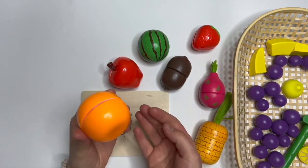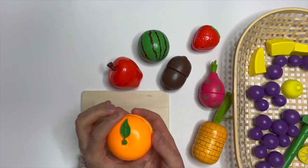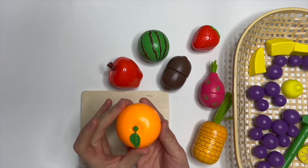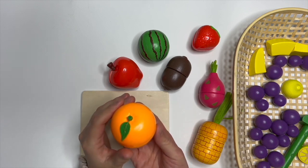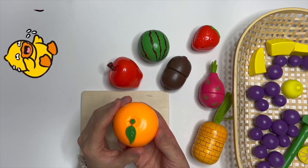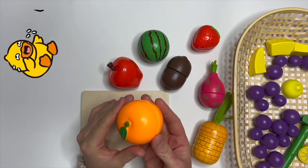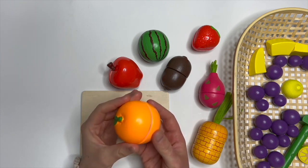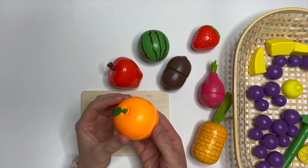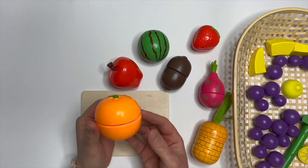Our next fruit is orange. Orange is in the color orange. It sounds so silly. Orange, orange. Orange has a lot of vitamin C and it's very good for our bones and teeth.